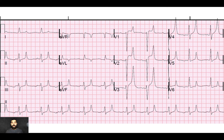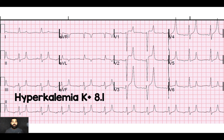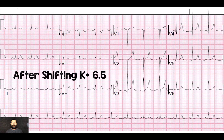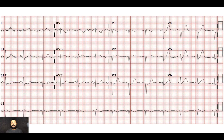Here's a dialysis patient who had missed several sessions, coming in with chest pain. Look especially at leads V3 and V4 — there are very large T waves, but they're super narrow. The patient ended up having a potassium of 8.1. We gave calcium chloride, D50 with 10 units of insulin, an amp of bicarb, and shifted them until we could get them to dialysis. A repeat EKG after shifting, with potassium down to 6.5, shows those T waves are still pretty big, especially in V3 — there's probably a component of benign early repol here as well.